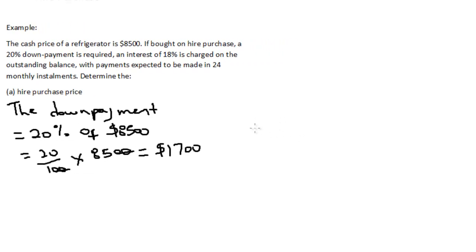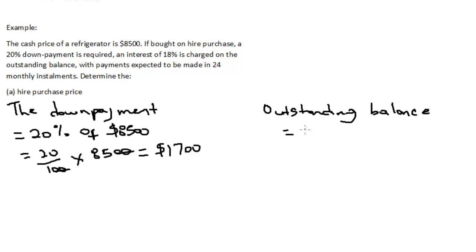The next thing we have to find is the outstanding balance. To find the outstanding balance, we subtract the down payment from the asking price. So that's $8,500 minus $1,700, which equals $6,800.